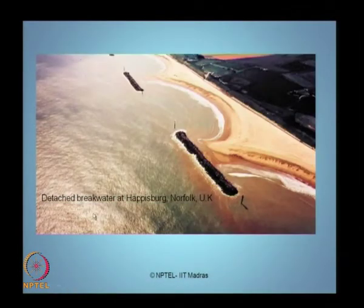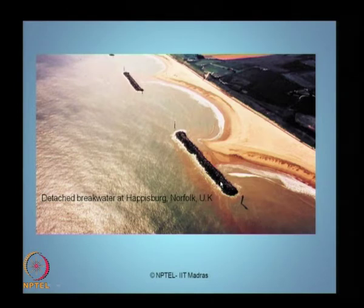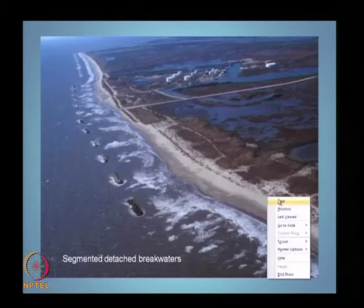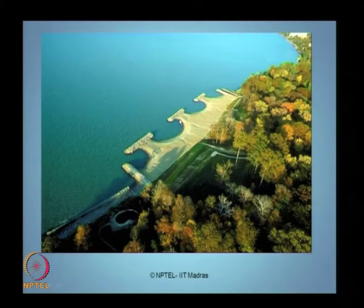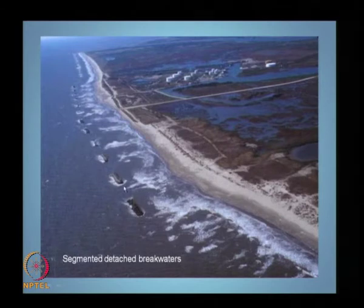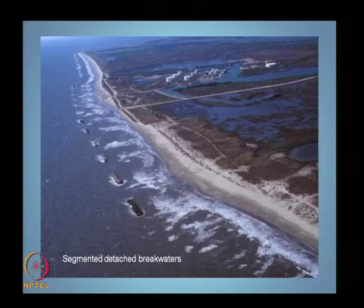Here is a picture of a detachable breakwater at Happisburgh, Norfolk, UK. The breakwaters are not continuous and not attached to the shore — they are separate units constructed in parts, providing desirable benefits only on those segments where constructed. Another photograph shows detachable breakwaters constructed on certain segments, not continuous nor connected to the shore. Segmental detached breakwaters are constructed parallel to the coast in intermittent modes. Detached breakwaters have their merits as well as a few disadvantages as discussed.